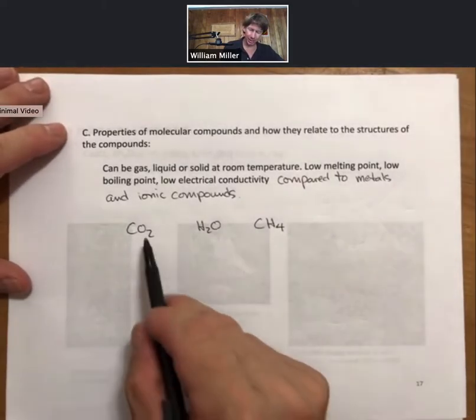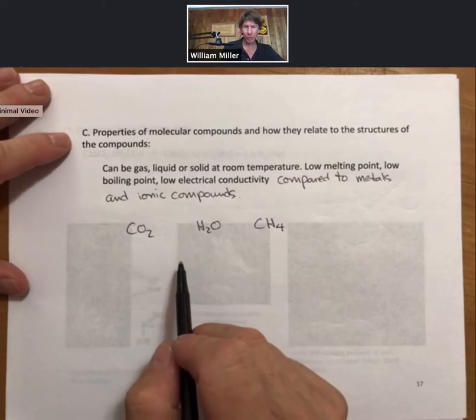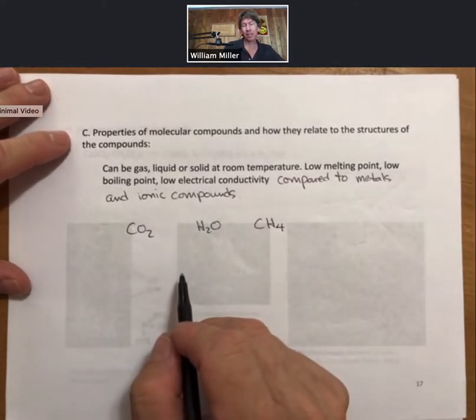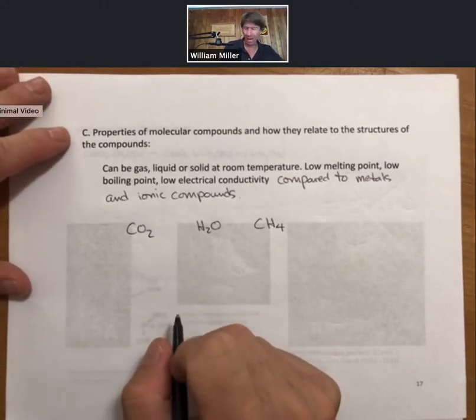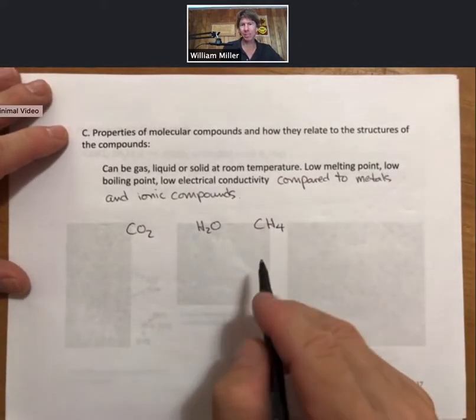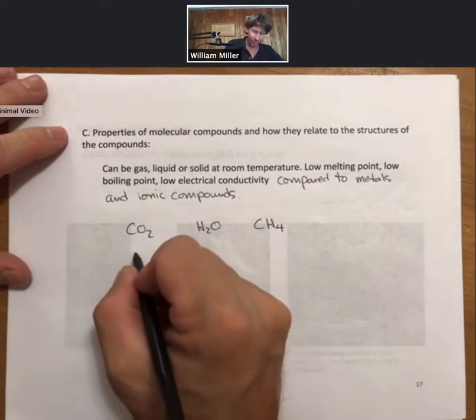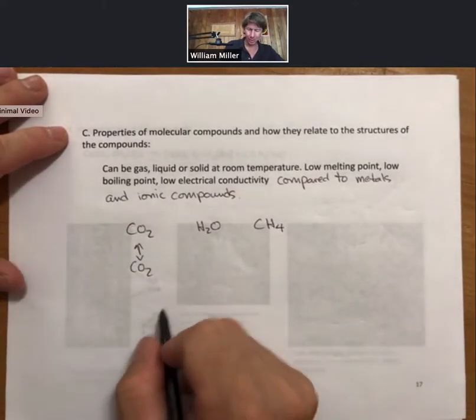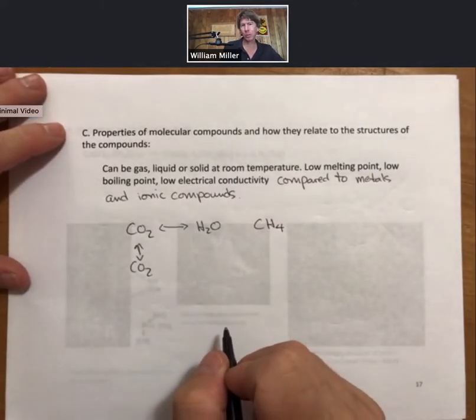So these compounds, and covalent compounds in general, will have low electrical conductivity because the electrons will be bound up in the bonds and the atoms. They will not be free to move. They have low melting and low boiling points, we'll see when we talk about intermolecular forces, because the forces between one CO2 and another, or one CO2 and an H2O, are relatively weak.